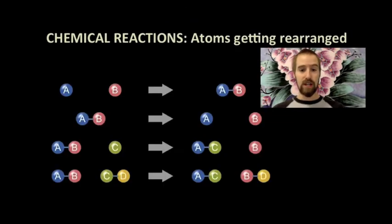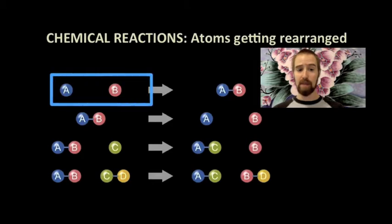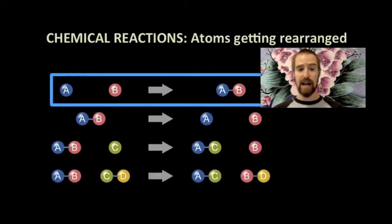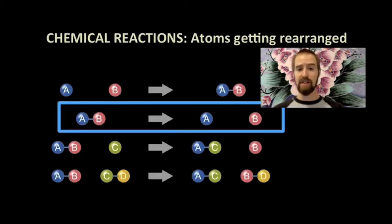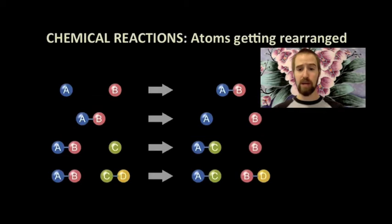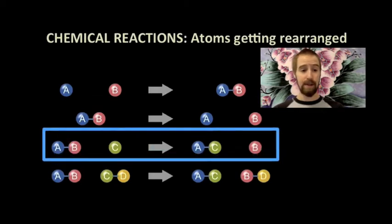Suppose that each ball represents an atom, and the letters tell us what kind of atom we have. In all these cases, you should notice that we end with exactly the same number and kinds of atoms that we started with. These atoms have, however, been rearranged and recombined.